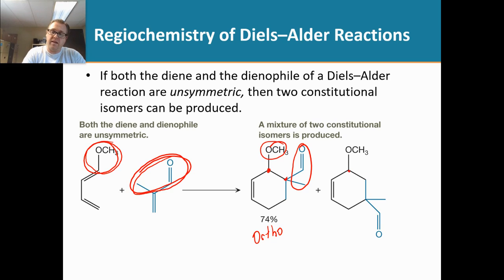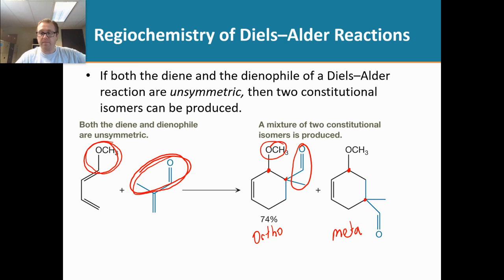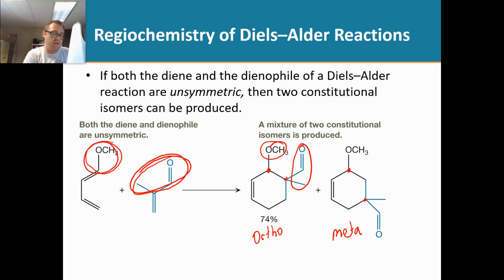When you see that there's a gap here, so the substituents are 1, 2, 3 carbons away from each other, then we call that meta. I'm just going to use these terms to describe the regiochemistry of the substituents and where they're at.